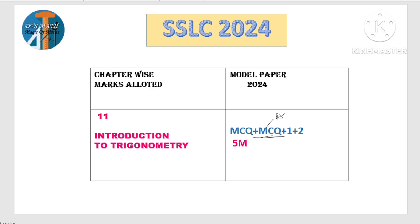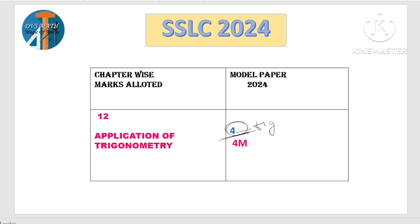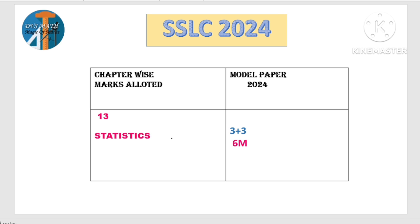11th lesson — introduction to trigonometry ಮತ್ತು application of trigonometry ಎರಡೂ ಸೇರಿ 9 marks cover ಆಗಬೇಕು. 4 plus 5 ಅಥವಾ 5 plus 4 — totally 9 marks cover ಆಗುತ್ತೆ. So total weightage for application of trigonometry is 4 marks (and introduction to trigonometry is 5 marks).